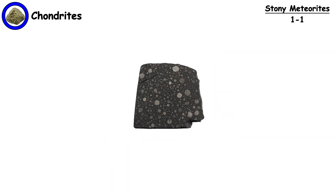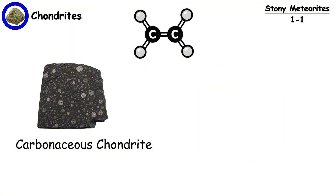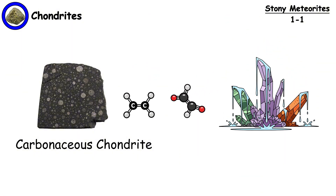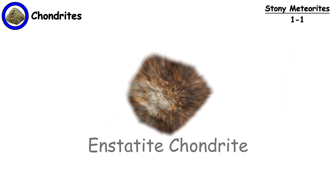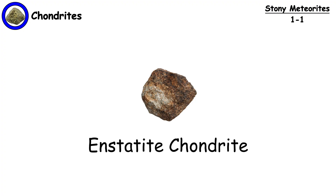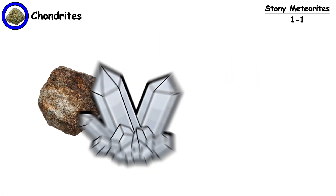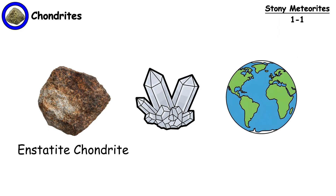The carbon-rich varieties are the solar system's time capsules. They contain organic compounds, water-keeping minerals, and sometimes even the building blocks of life — amino acids. Enstatite chondrites are the rarest among them, and they contain minerals rarely found on our planet.